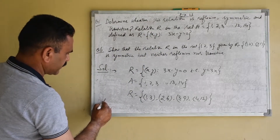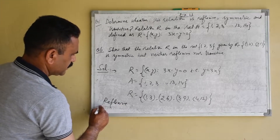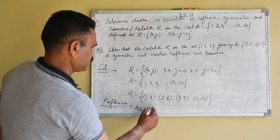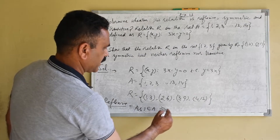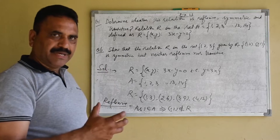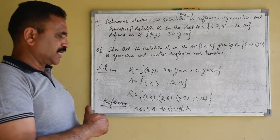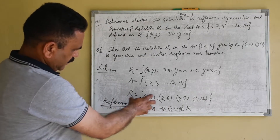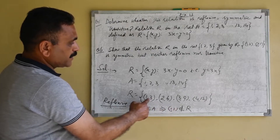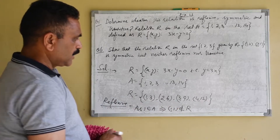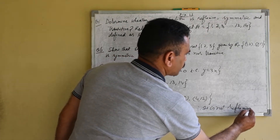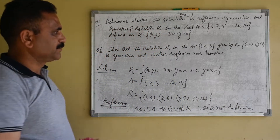Now we will discuss all types of relations. First is reflexive. As 1 belongs to A, this implies (1, 1) does not belong to R. We have seen that if every element is the image of itself, then the relation is reflexive. But here, element 1 belongs to A, yet the ordered pair (1, 1) is not a member of R. Therefore, it is not reflexive.